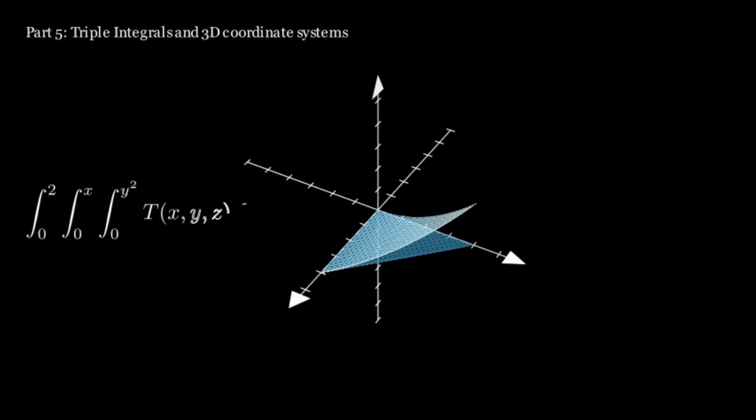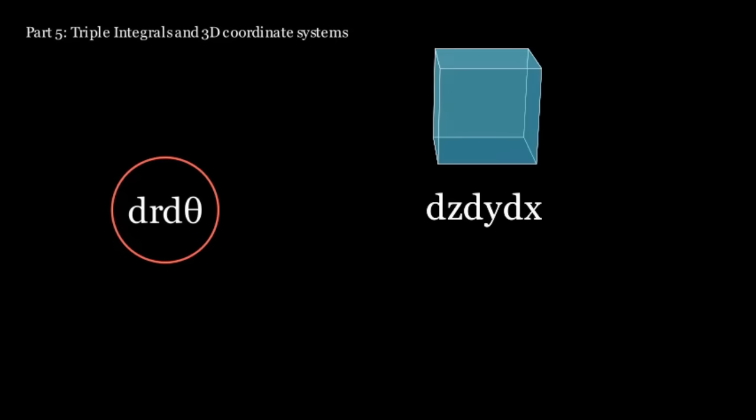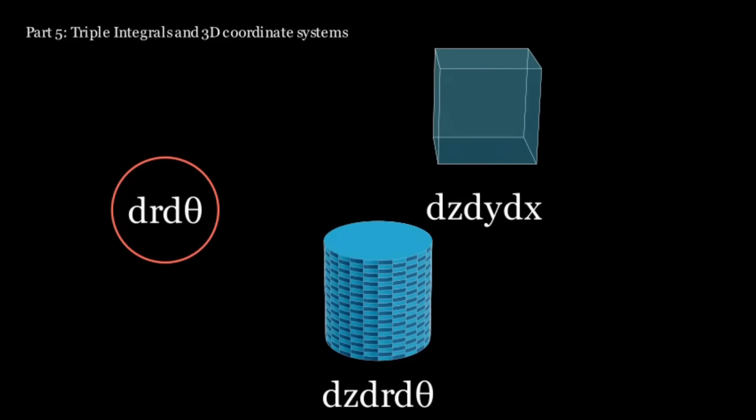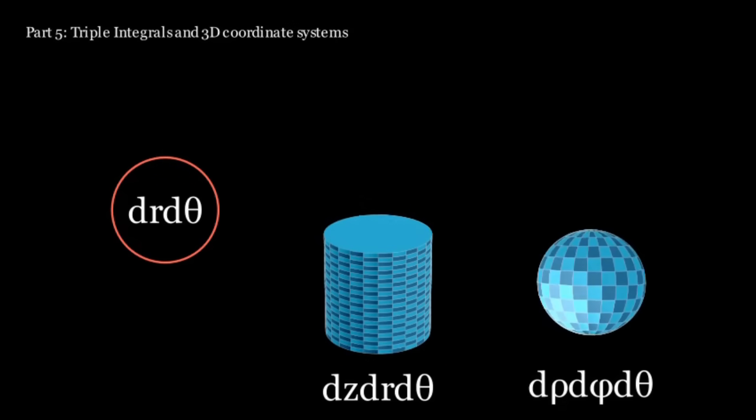Triple integrals can also be used for finding things like average temperature, where we would integrate the temperature function over a 3D surface to find the average temperature. When doing a double integral, sometimes it's easier to convert to polar coordinates. Likewise, there's an analogous system in 3D space, or rather two analogous systems, cylindrical and spherical coordinates.